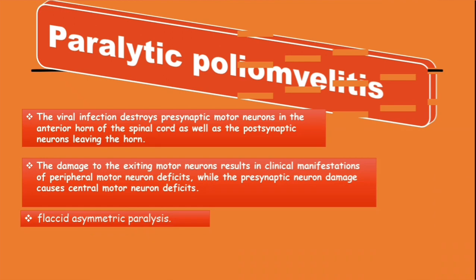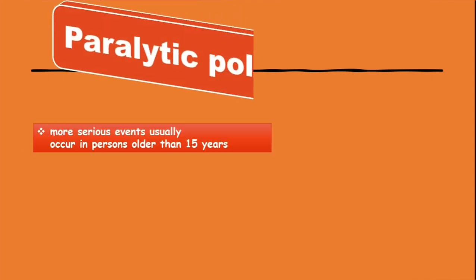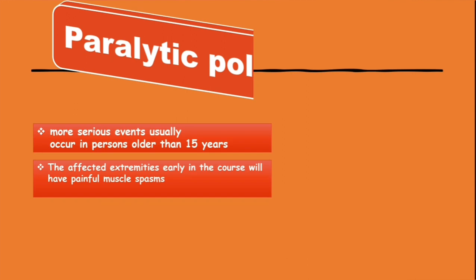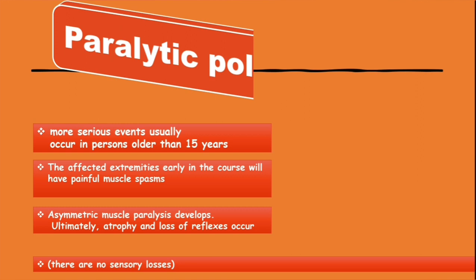The kind of paralysis is referred to as flaccid asymmetric paralysis. The paralytic disease can range from one leg or one arm to paraplegia, quadriplegia, and even respiratory muscle dysfunction — mostly the diaphragm — leading to death. In patients older than 15 years, the affected extremities will have painful muscle spasms and asymmetric muscle paralysis. Atrophy and loss of reflexes will follow, but bear in mind there is no loss of sensitivity.